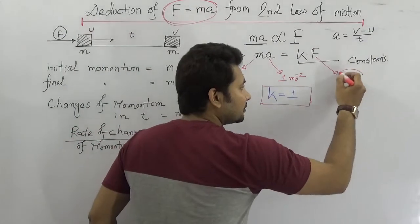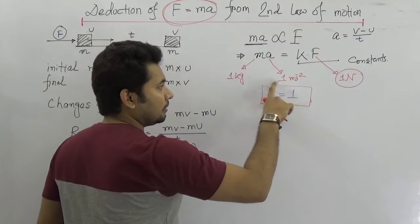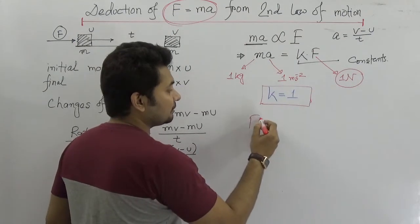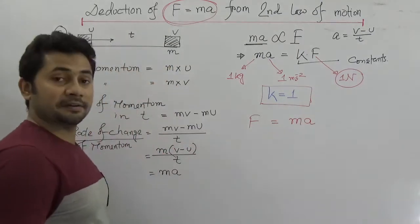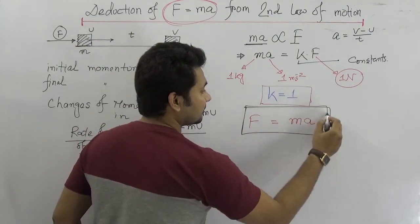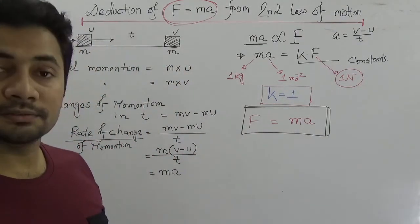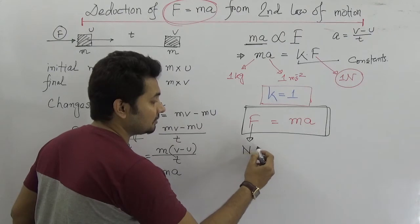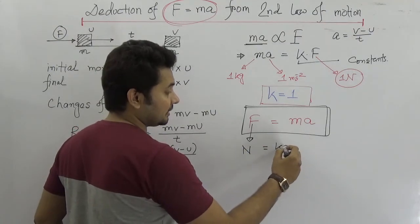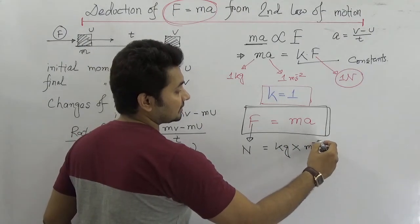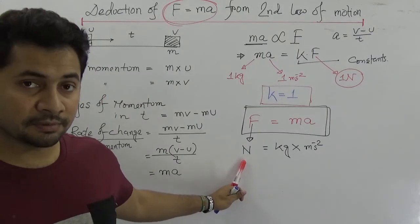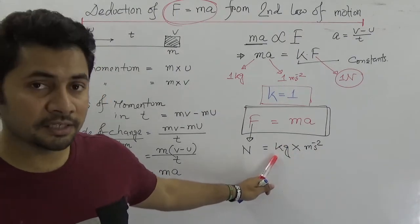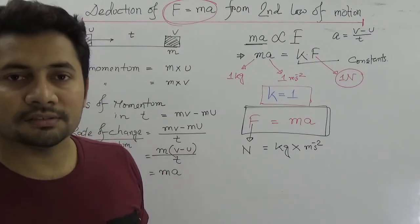We know the unit of force is Newton. If M is 1 kg, acceleration is 1 m/s², and force is 1 Newton, then K equals 1. So from the equation MA equals KF with K equal to 1, we get F equals MA. This is the equation derived from Newton's second law. The unit of M is kg, the unit of A is meter per second squared, so Newton equals kg times meter per second squared.